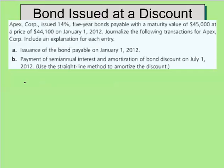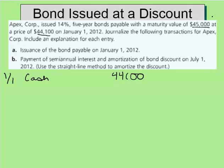Let's first handle the issuance of the bond. This is going to be on January 1st. We know how much we actually received for that bond — $44,100 — so we'll debit cash for $44,100. We also know the face value of the bond was $45,000, so we'll credit bonds payable for that. That's the amount we're going to have to pay back at the end of the five years. Bonds payable face value is $45,000.